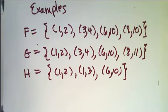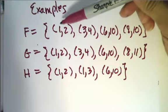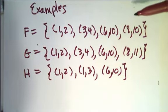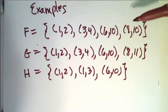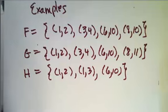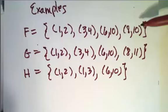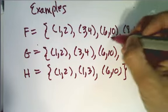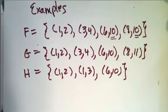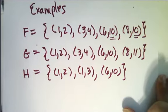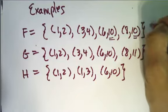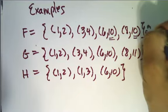Let's first look at F. I have ordered pairs with first coordinates 1, 3, 6, and 8. Each first coordinate is unique, so each first coordinate has exactly one second coordinate — F is indeed a function. However, I see that (6,10) and (8,10) share the y-value 10 with two different x-values, so although F is a function, it is not one-to-one.